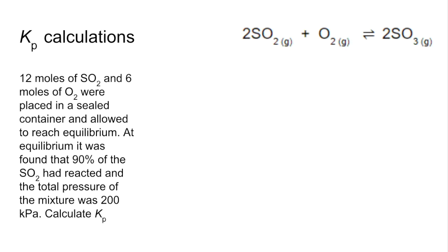So moving on to a Kp calculation now. So we're told that we've got 12 moles of SO2, 6 moles of oxygen. They're put in a sealed container, reach equilibrium, and at equilibrium, 90% of the SO2 is reacted. Total pressure is 200 kilopascals. We're going to calculate Kp and its units.